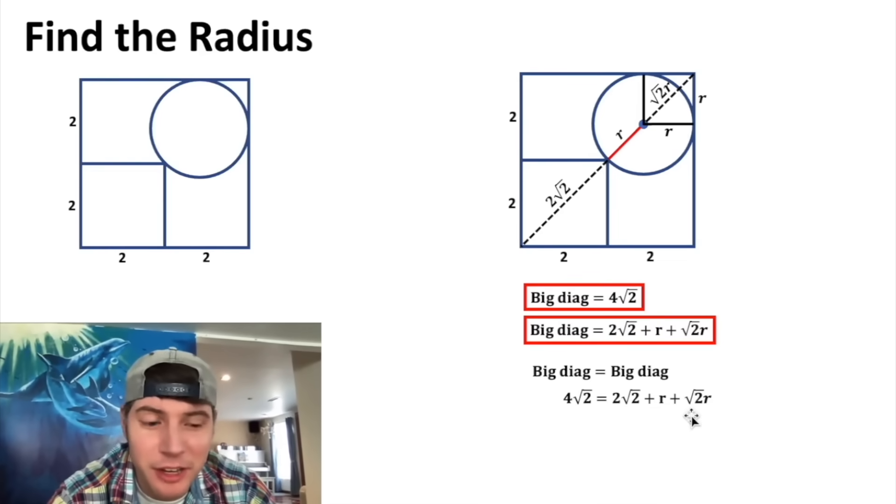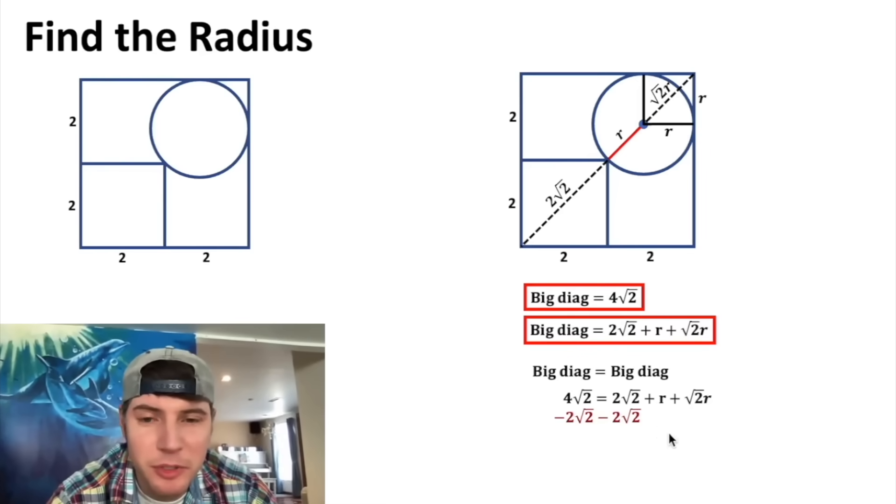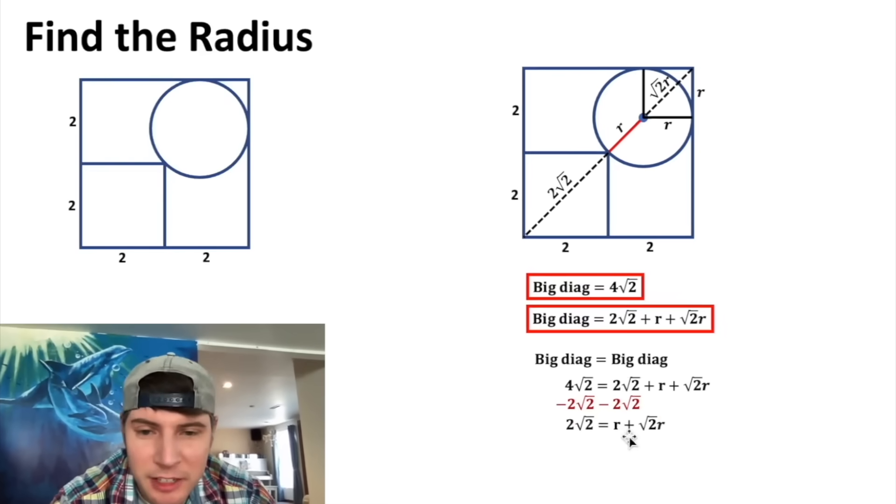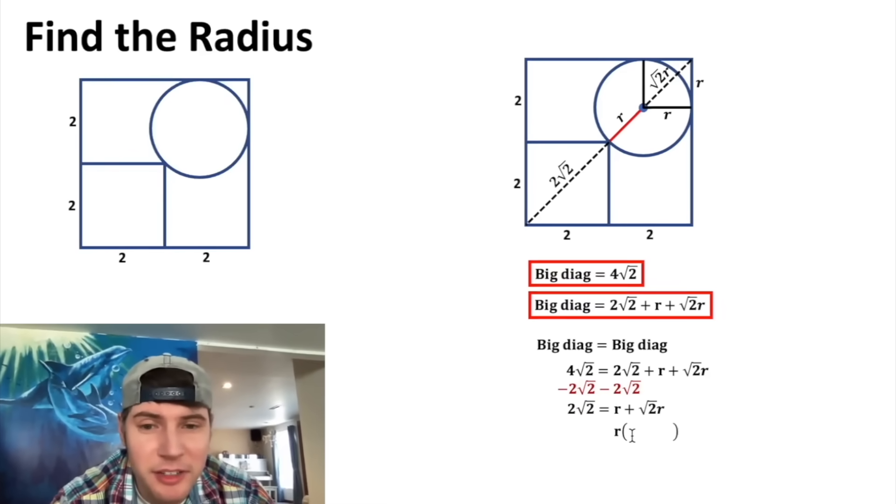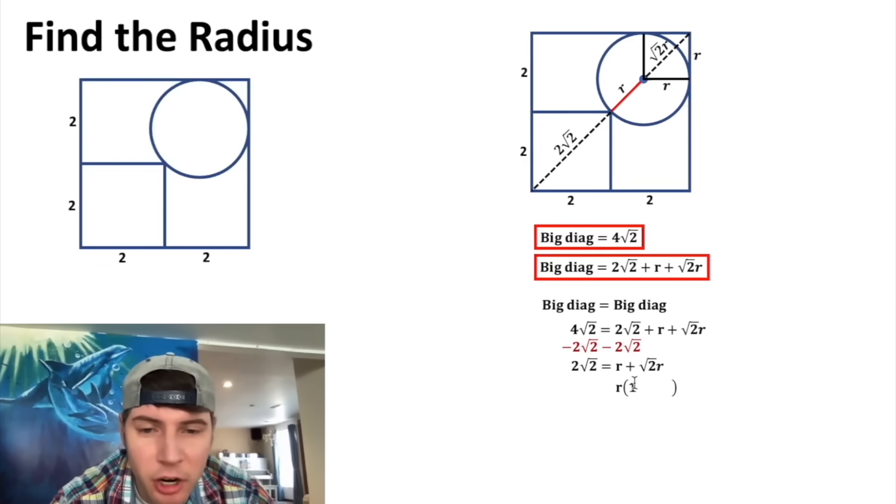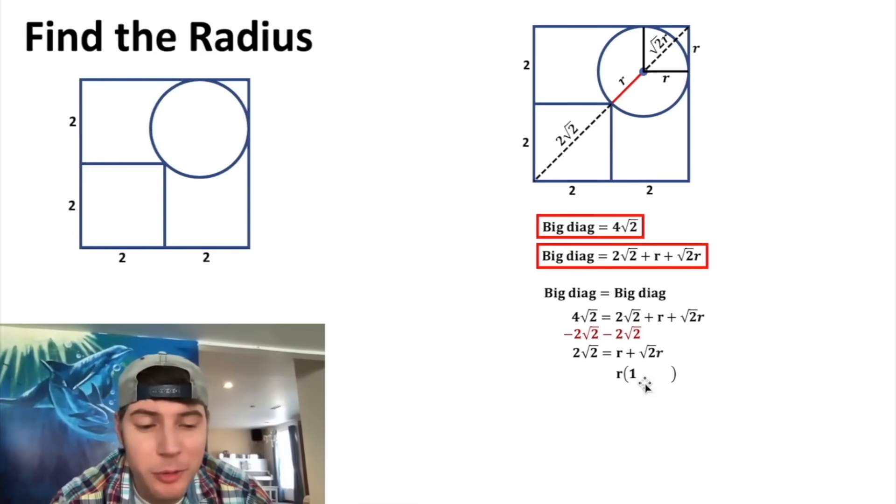So once we solve for r, we know the answer. We can subtract 2√2 from both sides. The left hand side becomes 2√2, right hand side that's gone, so it's just this right here. And we can scoot these over and let's factor an r out of the right hand side. So r times what gives us r? That's one. So r times one is r. And then r times what gives us √2r? That's going to be √2.